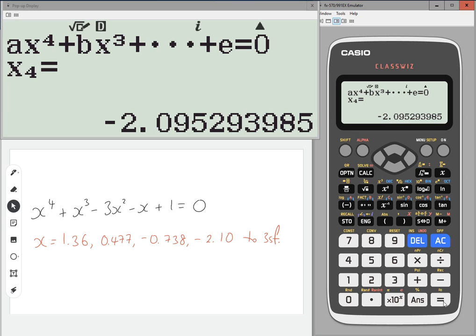So visually, what you're looking at is a quartic that looks something like this, and you know that this point would be minus 2.10, this point would be minus 0.738, this point would be 0.477, and this point would be 1.36.